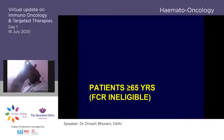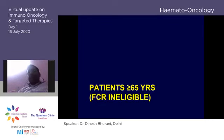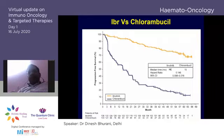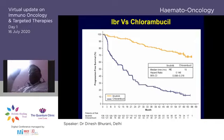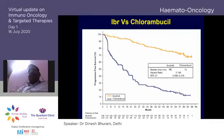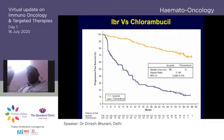Moving to elderly patients who are not FCR-eligible: the RESONATE trial used chlorambucil as the comparator arm — indeed, chlorambucil has served as the poor control arm in many trials seeking regulatory approval — and the trial showed a significant difference in both progression-free survival and overall survival.